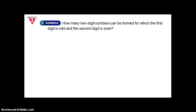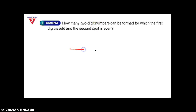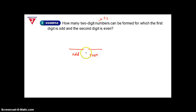Let's talk about example number 2. How many two-digit numbers can be formed for which the first digit is odd and the second digit is even? You know this number is going to have two digits — one digit here, one there. For example, 11 is a two-digit number. So the first digit has to be odd and the second digit has to be even.